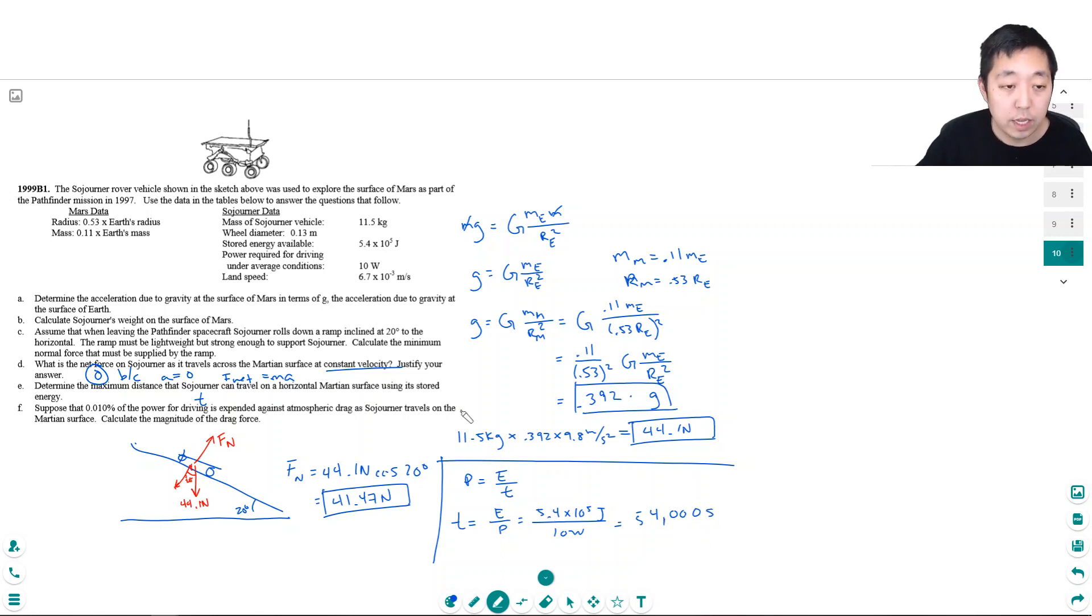Okay, and its speed is constant at this. So its position is just V naught T because there's no acceleration. So it would be 6.7 times 10 to the minus 3 meters per second times 54,000 seconds. And that is 361.8 meters.